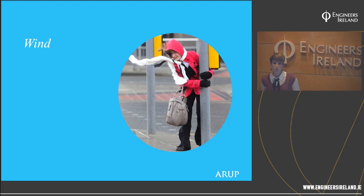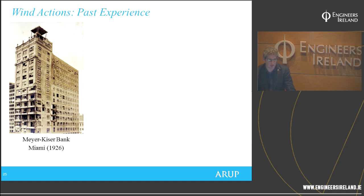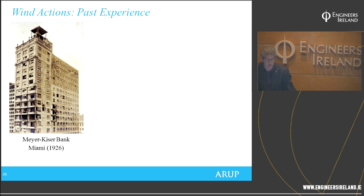When talking about wind, it's important to consider why wind engineering matters in civil engineering. The Meyer-Keiser building in Miami failed under wind loading — it had no allowance for wind, very little cross-bracing, and was not designed to take the lateral loads of the wind.